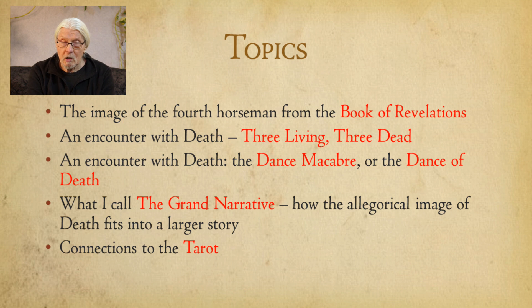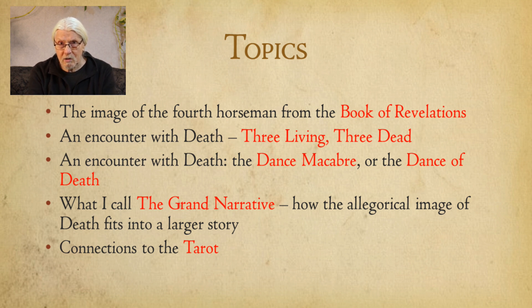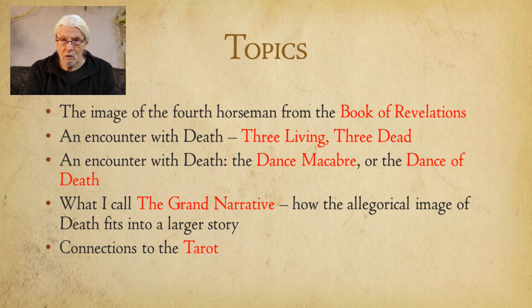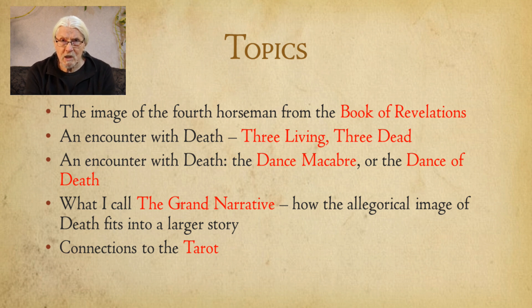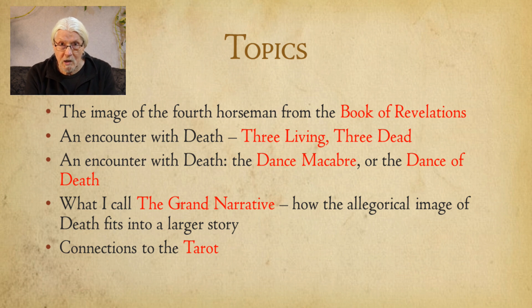Firstly, the description of the fourth horseman from the book of Revelation. Secondly, an encounter with death — a quaint medieval tale called Three Living, Three Dead. Thirdly, another encounter with death known as the Dance of Death or the Danse Macabre. Fourthly, what I call the Grand Narrative: how the allegorical image of death seems to fit into a larger story. And lastly, how it all fits together and how it would seem to relate to several of the tarot trumps.